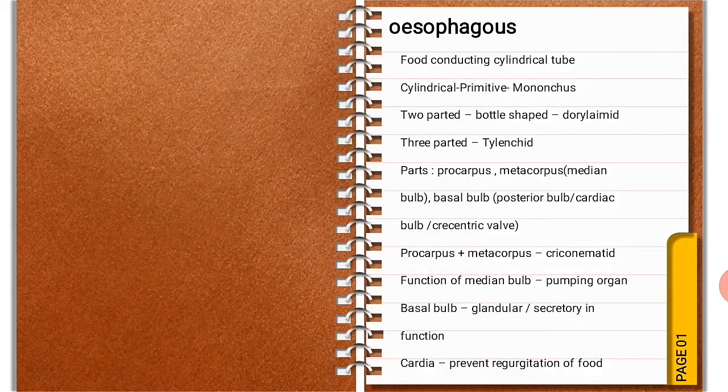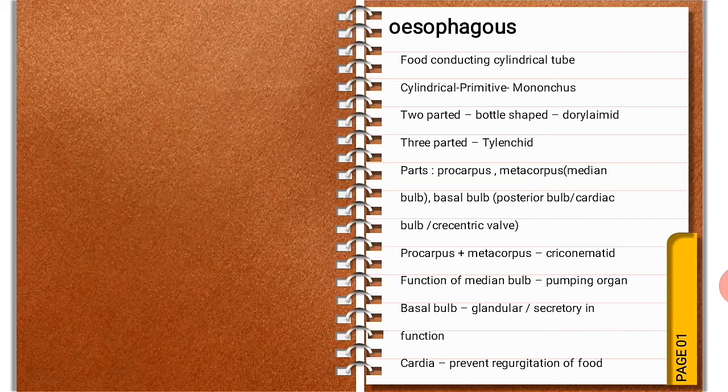The basal bulb is otherwise known as the posterior bulb or the cardiac bulb. A crescentic valve or butterfly valve is present in the basal bulb of Rhabditida nematode. A flanged esophagus is present in Xiphinema, and an unflanged esophagus is present in Longidorus, which is the basal bulb part. In Criconematida, procorpus and metacorpus are fused together.